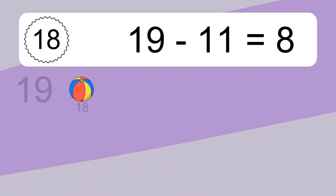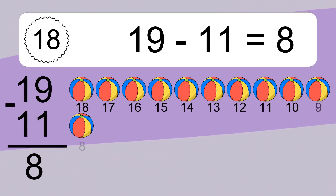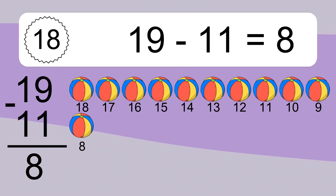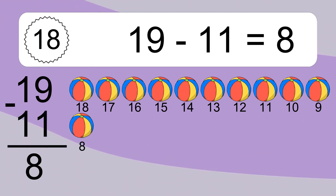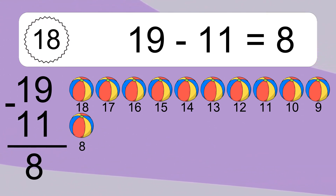19 minus 11 equals what? 19 minus 11 equals 8. Let's count it: 18, 17, 16, 15, 14, 13, 12, 11, 10, 9, 8.